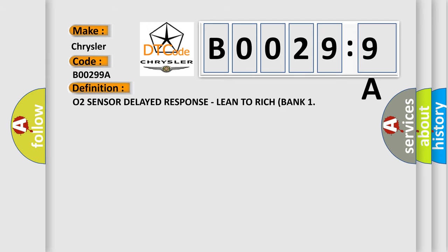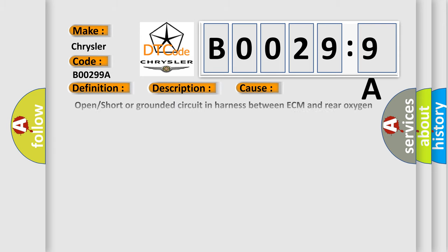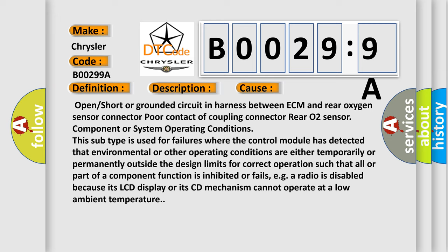O2 sensor delayed response, lean to rich bank. And now this is a short description of this DTC code: Slow response lean to rich from the rear O2 sensor. This diagnostic error occurs most often in these cases: